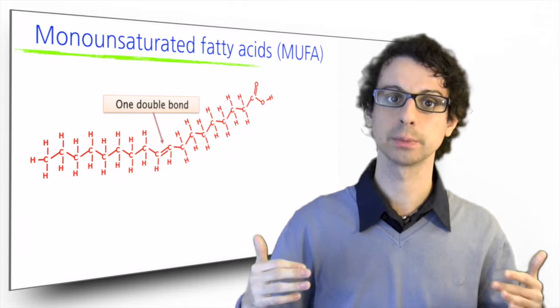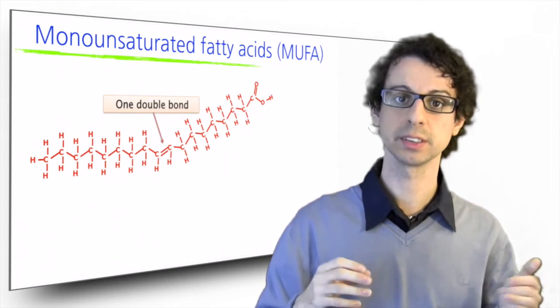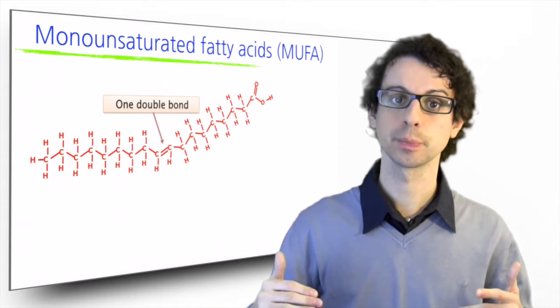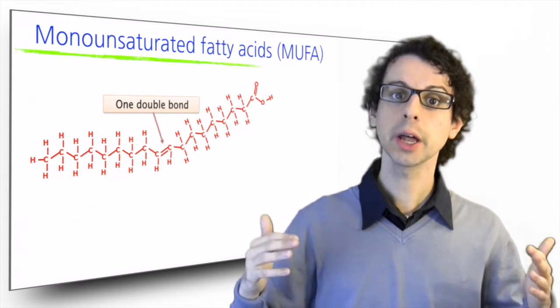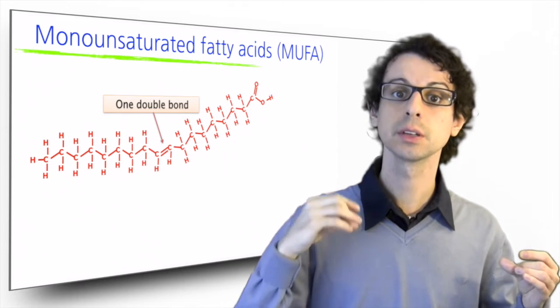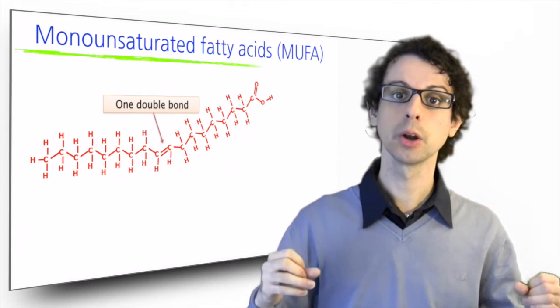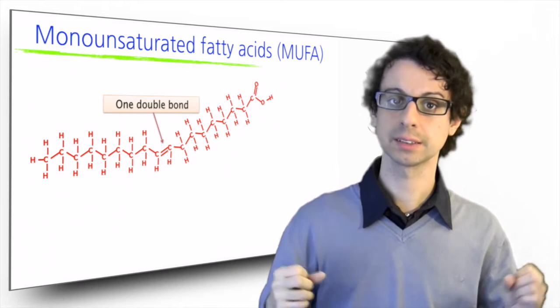So there are fewer hydrogen atoms in this molecule compared with stearic acid. Still 18 carbons, but less hydrogen. Now, the molecule is not anymore saturated with hydrogen, and because there is only one of these double bonds, it's called monounsaturated. Mono for one. That is, one unsaturation.